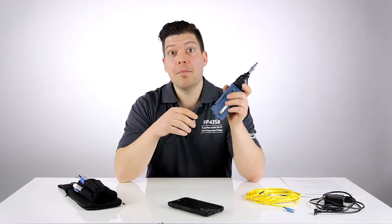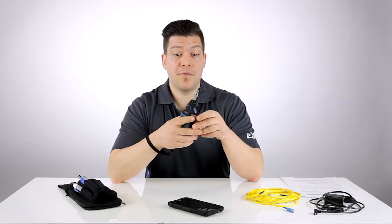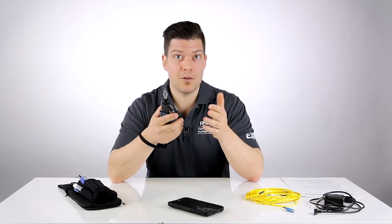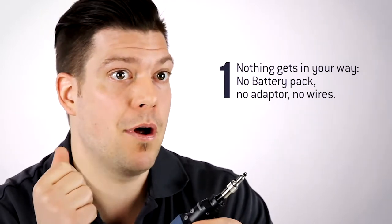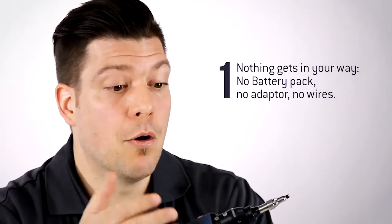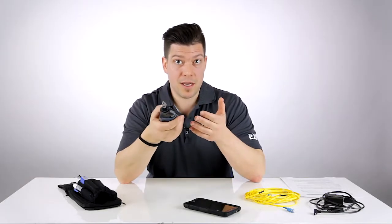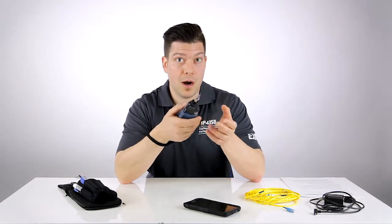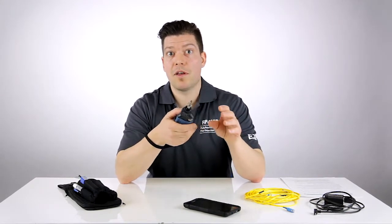There are many benefits of using a wireless inspection probe such as this one. The first one looks very obvious but it's the fact that you have absolutely nothing in your way as you perform your inspection task. That means no battery pack, no WiFi adapter, and no wires in your way. That really improves the test ergonomics and helps you reach out to locations which are usually hard to access and have one hand free to move things over and be able to do your inspection more easily.